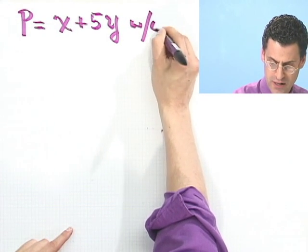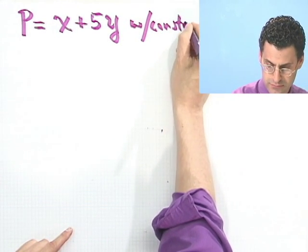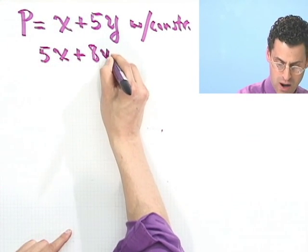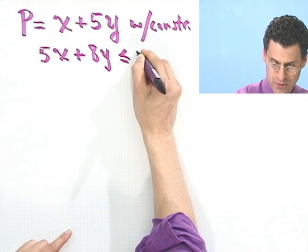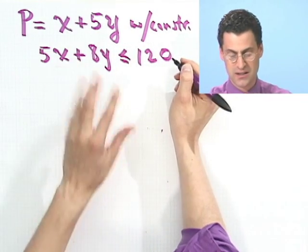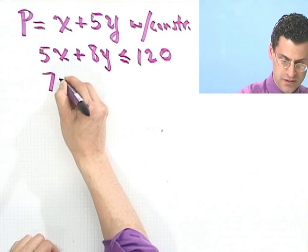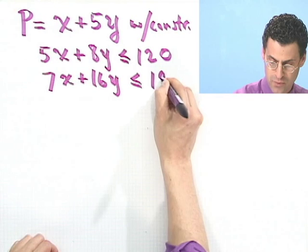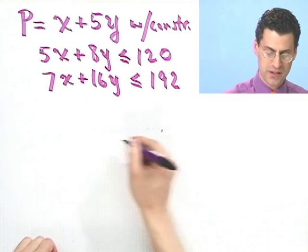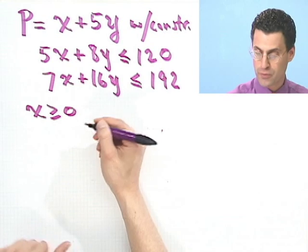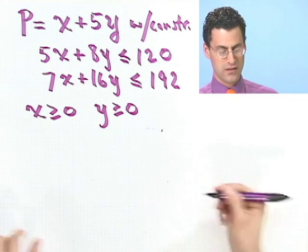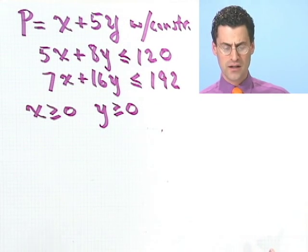But there's some constraints. And here are the constraints: 5x + 8y is less than or equal to 120, and then 7x + 16y less than or equal to 192. And there's some other constraints. X cannot be negative, maybe x is the number of workers you have. And y cannot be negative, maybe that's the number of buildings you rent.